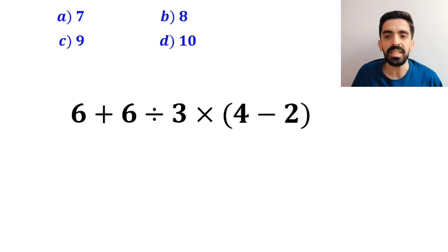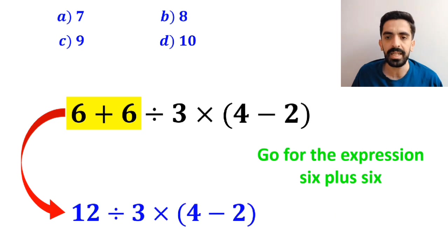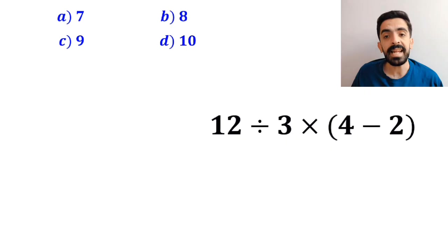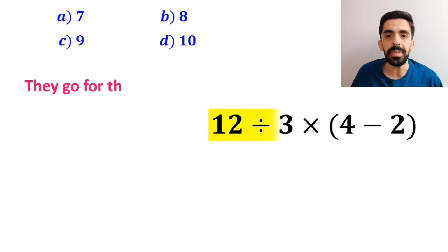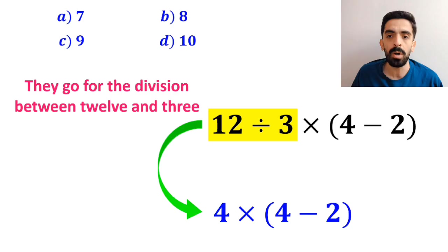Many people when solving this question first go for the expression 6 plus 6 and write this expression as 12 divided by 3 times 4 minus 2 inside the parenthesis. In the next step, they go for the division between 12 and 3, and this expression simplifies to 4 multiplied by 4 minus 2 inside the parenthesis.